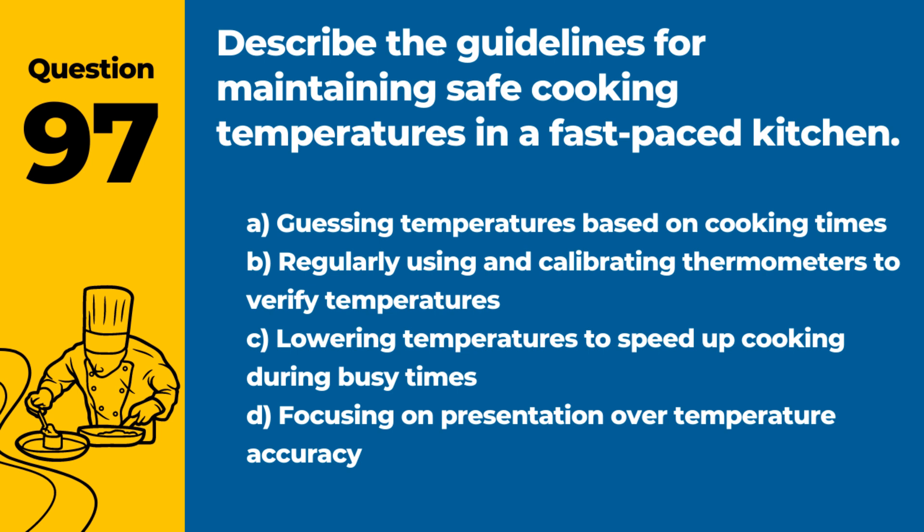Question 97. Describe the guidelines for maintaining safe cooking temperatures in a fast-paced kitchen. Answer: B. Regularly using and calibrating thermometers to verify temperatures. Accurate temperature measurement is critical for food safety, regardless of kitchen pace.